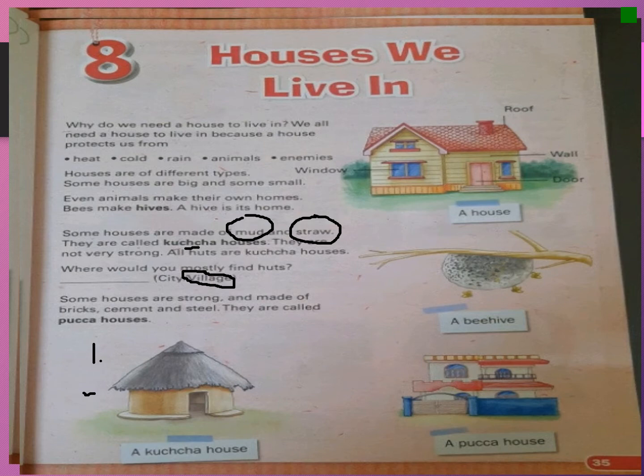Some houses are strong and made of bricks, cement and steel. Some houses are very strong because they are made of bricks, cement and steel. These are called paka houses. Paka houses are strong and they are made of bricks, cement and steel.